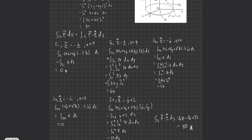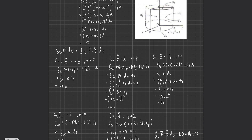Now I'll solve the surface integral side of the Gauss Divergence Theorem. There are six surfaces in total. For S1, the normal is negative k and z equals 0 — since there is no z and no k contribution, the integral is zero. For S2, the normal is k and z equals 4. Multiplying gives 16; with x and y both from 0 to 2, the integral gives 64.